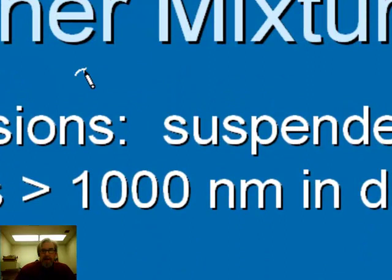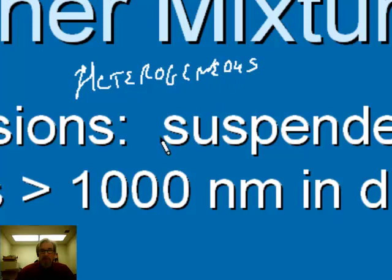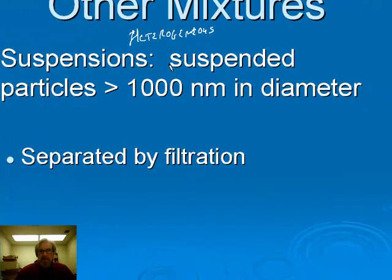Suspensions are examples of heterogeneous mixtures — 'heterogeneous' means different forms, so by eye we can see different substances in the mixture. Lots of medicines are suspensions, some kinds of paint are suspensions. Given time, these will separate on their own by the action of gravity, as the heavier suspended phase particles settle out and leave the suspension medium on top.